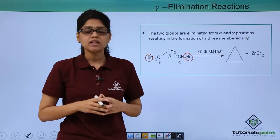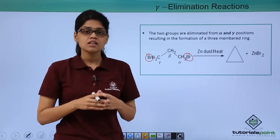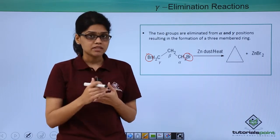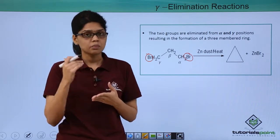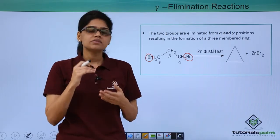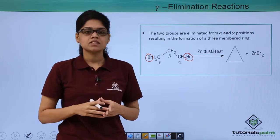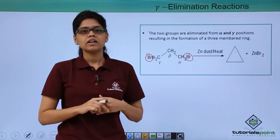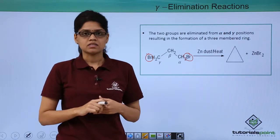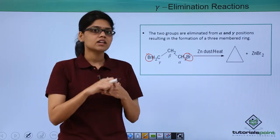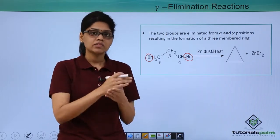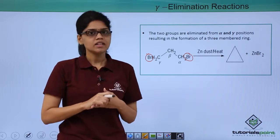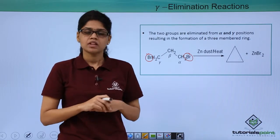I hope you are very clear on what elimination reactions are, the conditions under which they take place — essentially in the presence of a strong base — and the different types: alpha, beta, and gamma elimination reactions. There are also other types called E1 and E2 reactions, about which you will learn in detail later. Thank you.